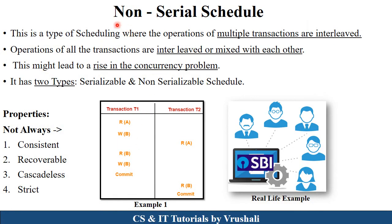The next type of schedule is non-serial schedule, which is the complete opposite of serial schedule. Here, multiple transactions are performed simultaneously — all transactions are interleaved or mixed with each other. In this example, transaction T1 performs read and write operations, and in between, T2 performs its read operation, then T1 again does read and write, and after commit T2 performs read. There is no waiting stage — all transactions are performed simultaneously.